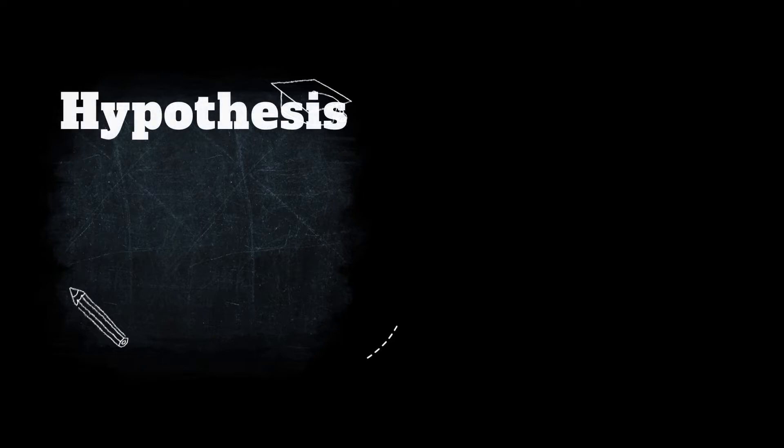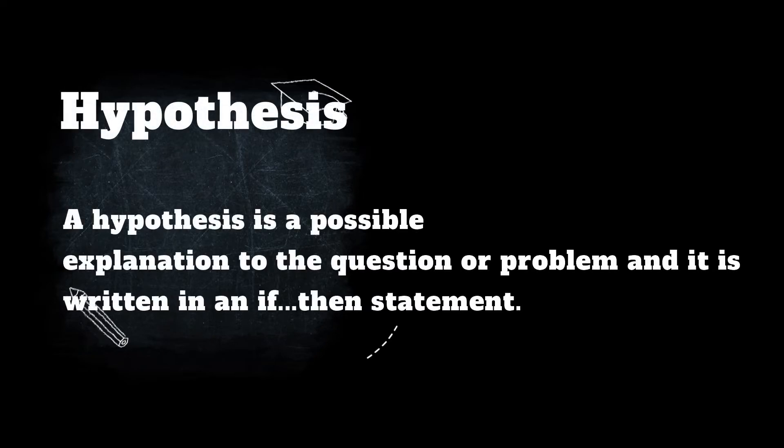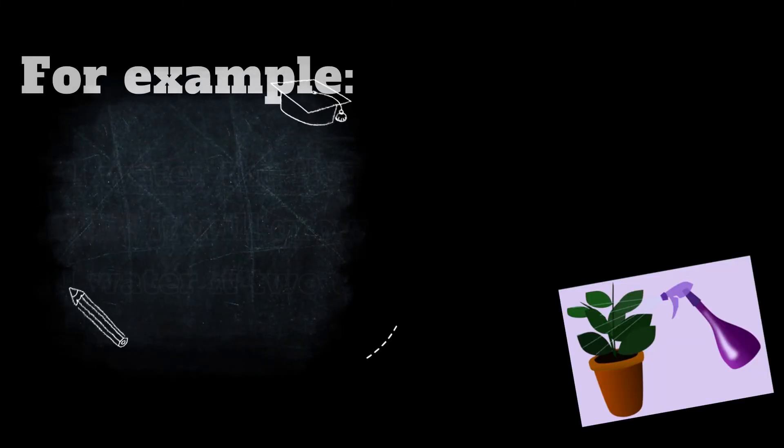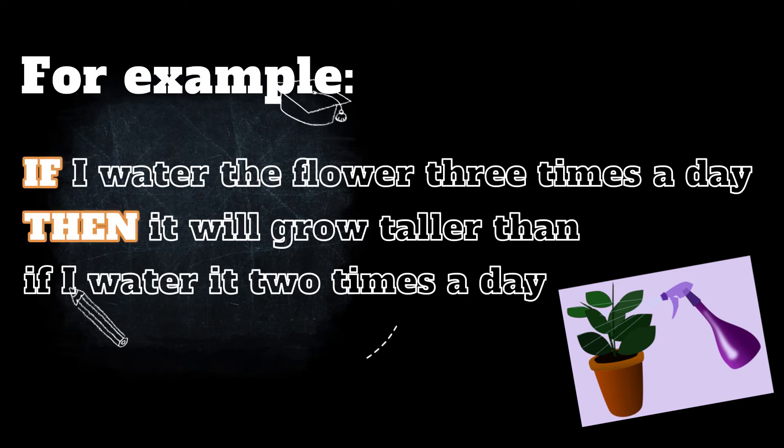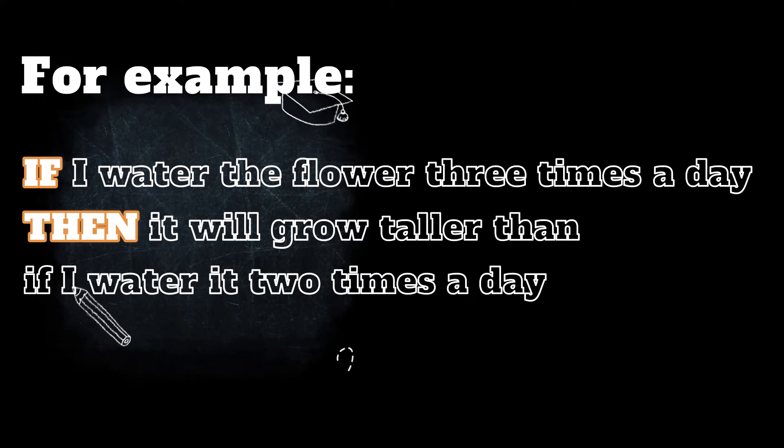Once you have come up with the question that you would like to test, you're going to need a possible explanation for what's going to happen in this experiment, and that is called our hypothesis. A hypothesis is usually written in an if-then statement, and it can also be written in an if-then-because statement. For example, if I water the flower three times a day, then it will grow taller than if I watered it two times a day.